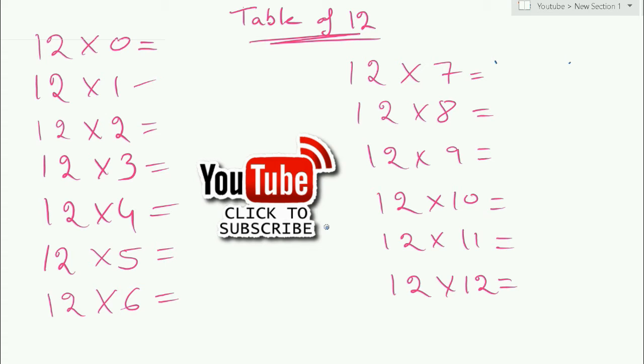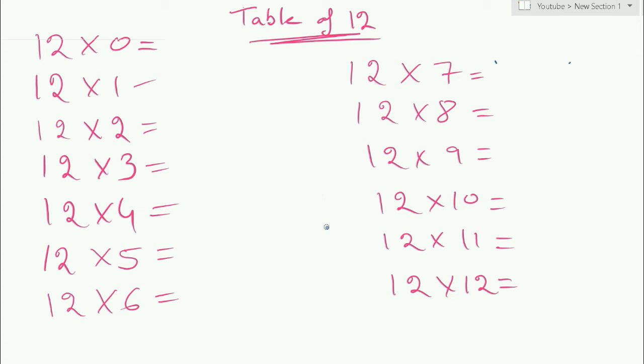So the trick for the table of 12 is that you want to start by writing 0 to 14 by skipping the number 5 and 11.